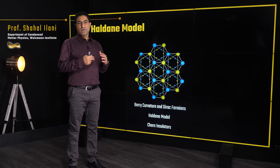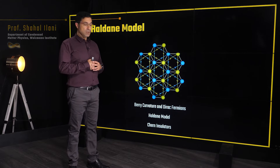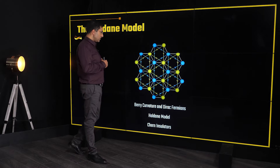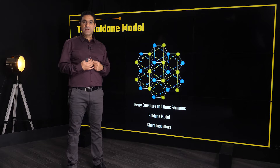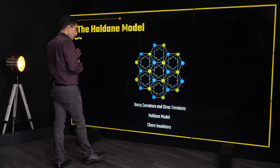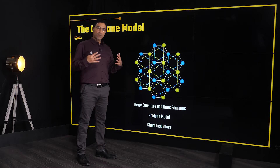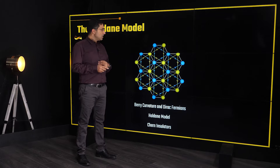In this talk, we're going to discuss the Haldane model, which is the first model that introduced the concept of topology. We're going to cover a few different aspects of the Haldane model. The first thing we'll discuss is the concept of Berry curvature and Berry phase, specifically in the context of Dirac fermions. We'll introduce the Haldane model and solve it, and from that, the concept of Chern insulator is going to emerge.